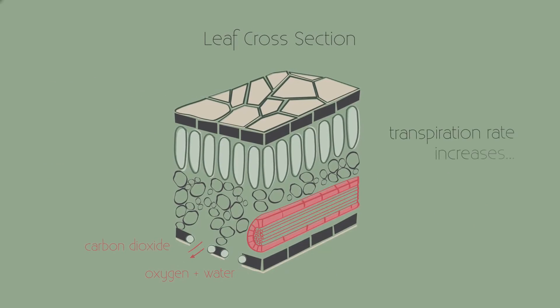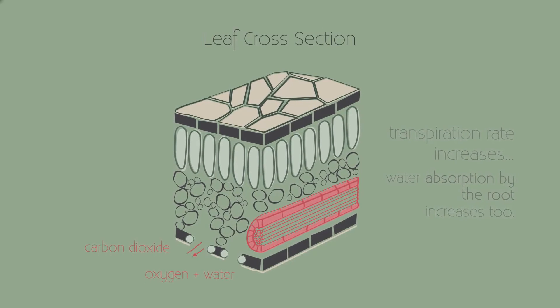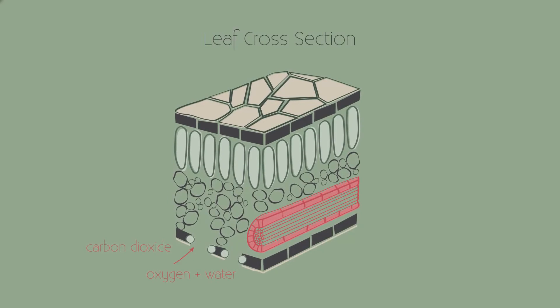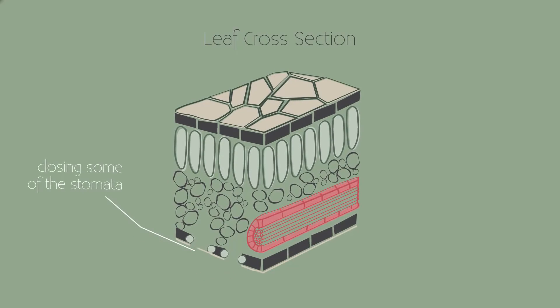If the transpiration rate increases, then the rate of water absorption by the roots needs to increase too. When water is scarce, or if the roots are damaged, the plant needs to reduce its transpiration rate. It does this by closing some of its stomata.